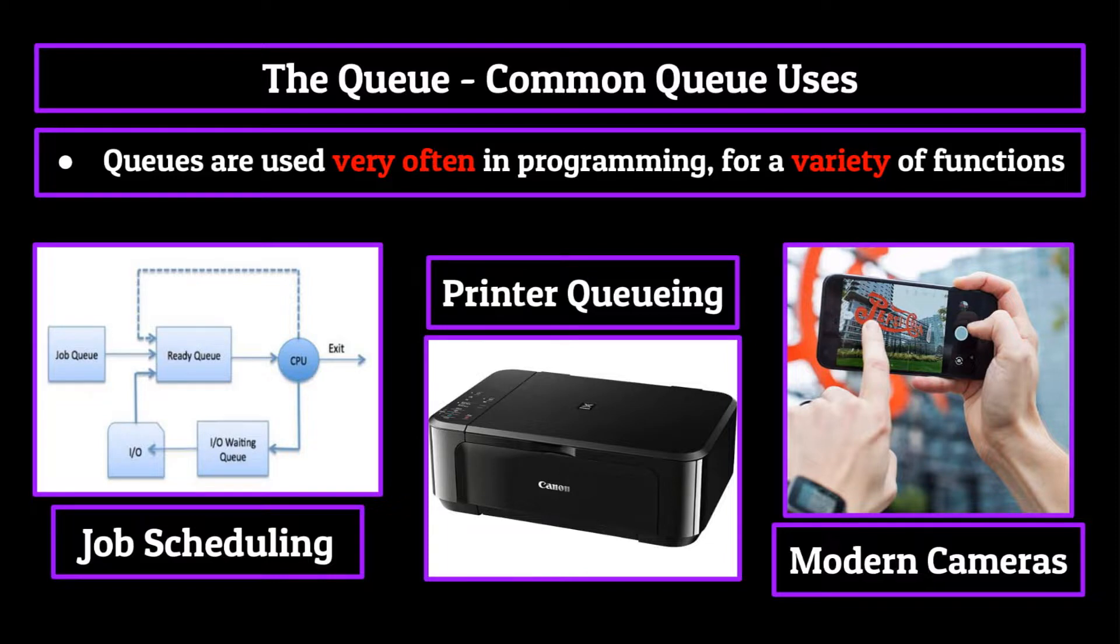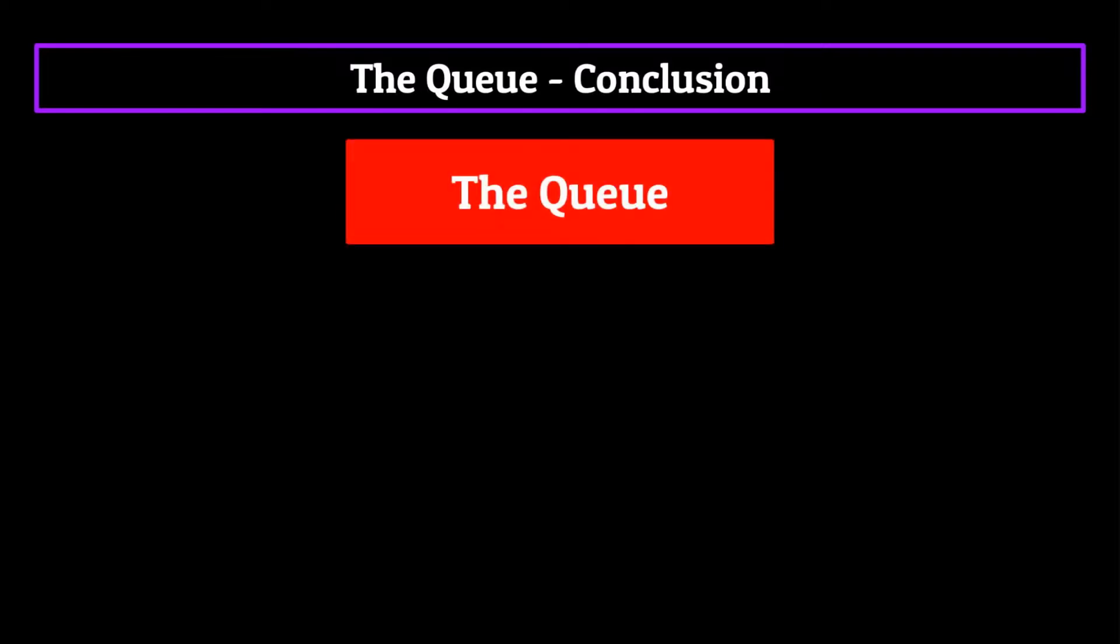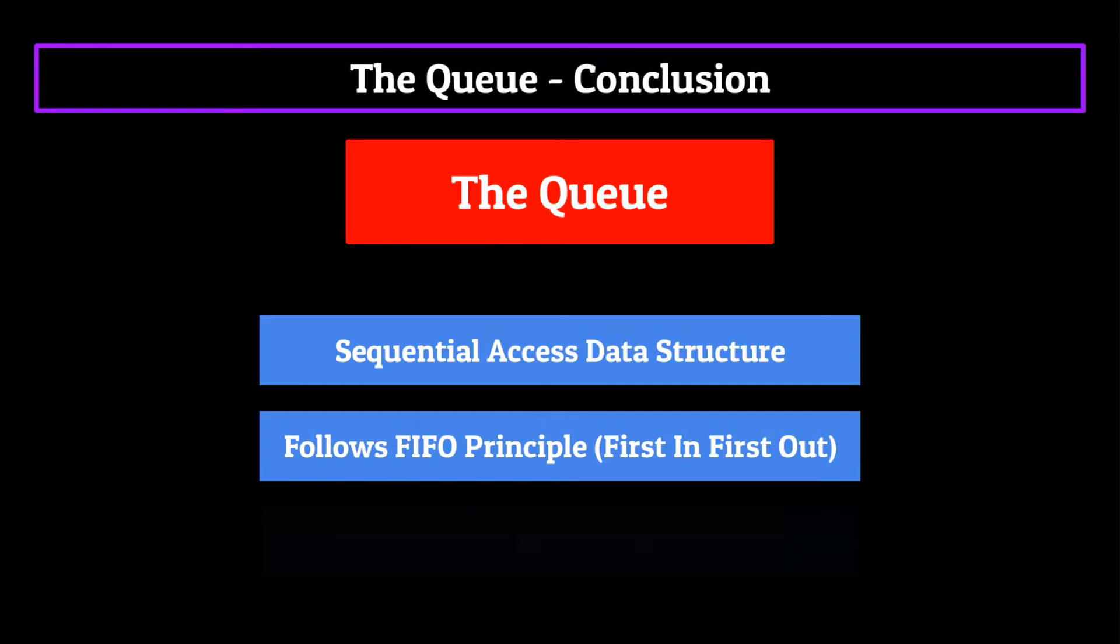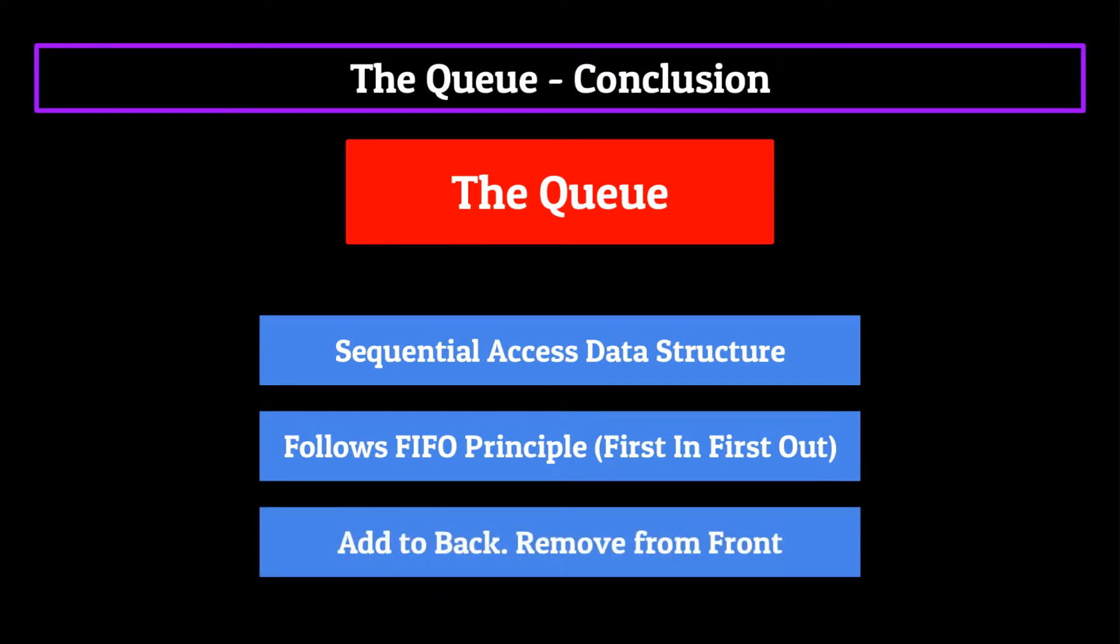And now that you've made it to the end of this video, you have all the tools needed to harness that power. This also concludes our discussion on the queue, a sequential access data structure which follows the FIFO principle to add elements to the back and remove elements from the front. Up next, we'll continue with sequential access and talk about one of my personal favorite data structures, the linked list. But until then, peace.